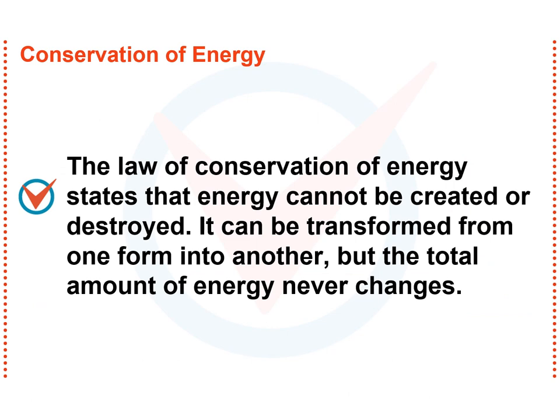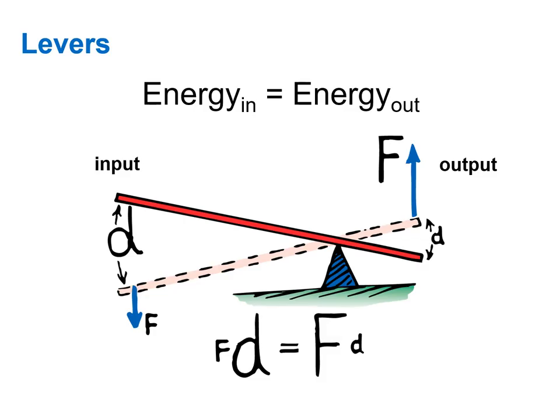Now we know that no energy is created or destroyed by any system. Energy can change form, but the total amount of energy, at least in the entire universe, does not change. And therefore our lever has to obey the law of conservation of energy. We could substitute instead of work in equals work out the words energy. Energy in on the left side must equal energy out on the right side.